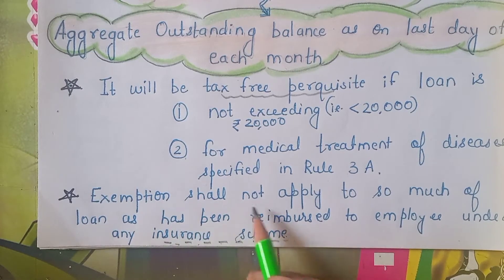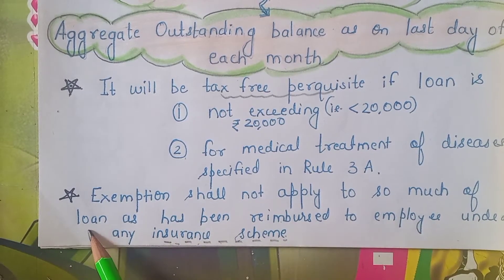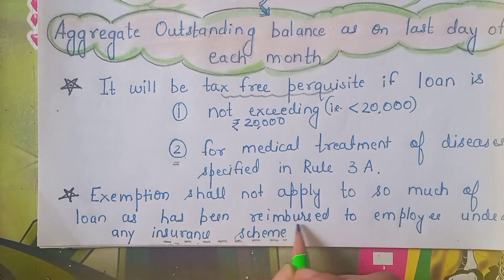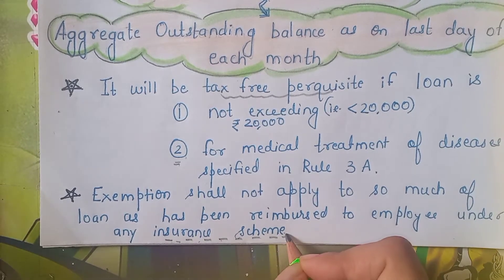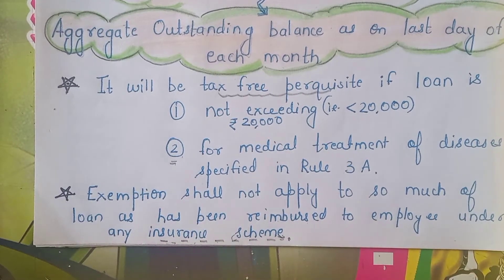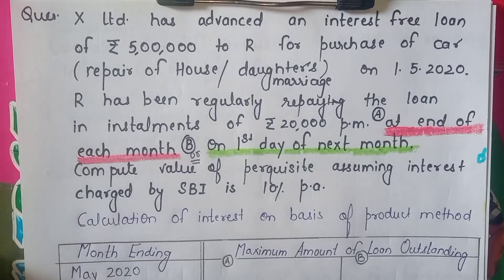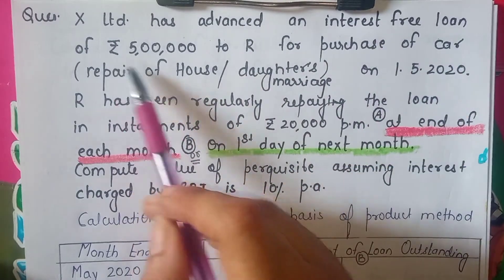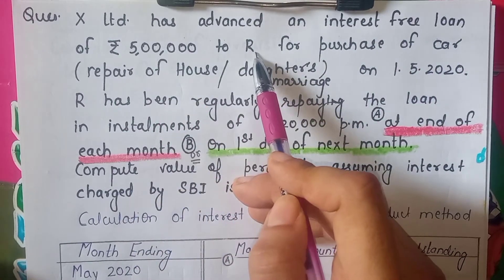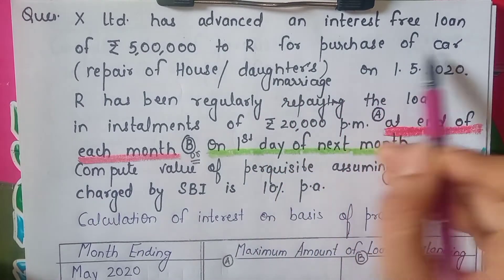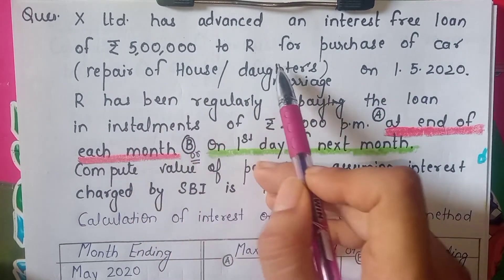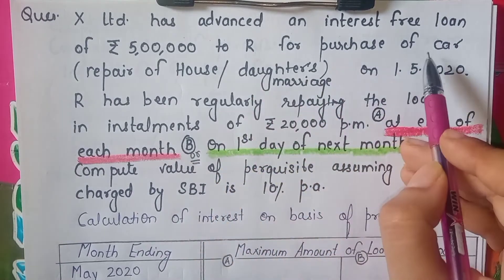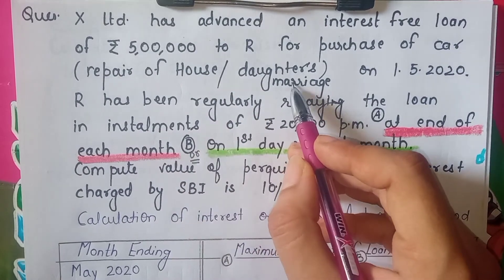The exemption shall not apply to the portion of the loan that is reimbursed by an insurance scheme. The second case where this is a tax free perquisite is if the loan is taken for medical treatment of a disease specified under Rule 3A — it can be for purchase or repair of a house, or a daughter's marriage. In these cases the treatment is the same.